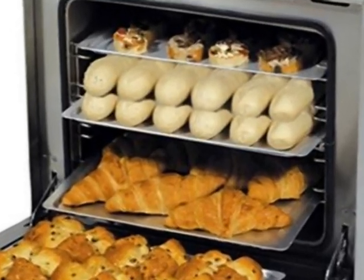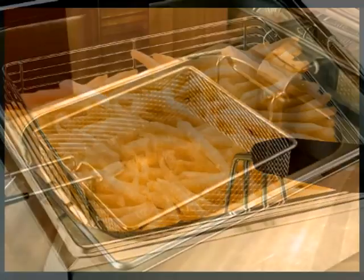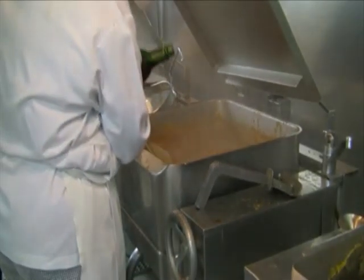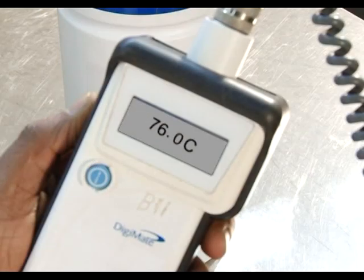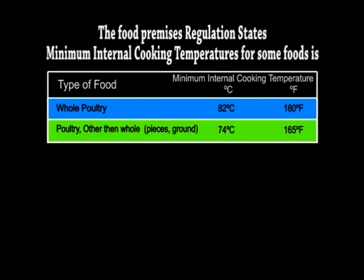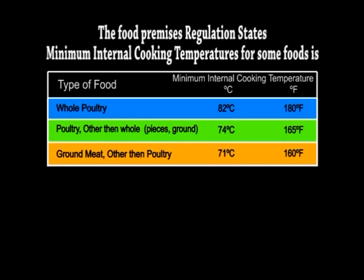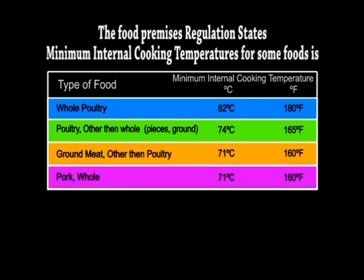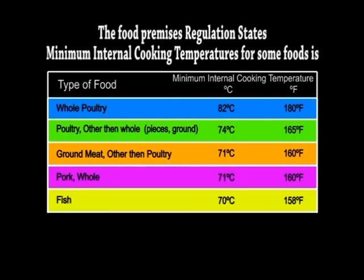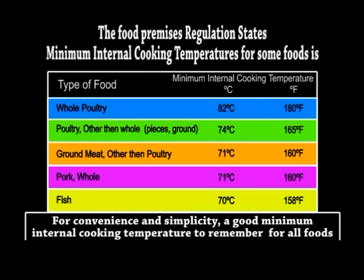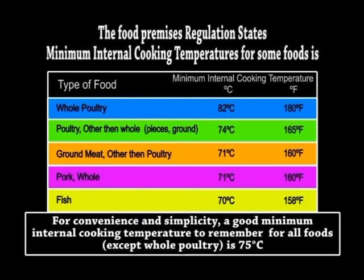Avoid overloading ovens and fryers as the heat may not penetrate the food evenly. When cooking an item with different types of meat mixed together, cook to the highest required temperature. The food premises regulation states minimum internal cooking temperatures: whole poultry — 82°C; poultry pieces and ground poultry — 74°C; ground meat other than poultry — 71°C; pork whole — 71°C (160°F); fish — 70°C. For convenience, a good minimum internal cooking temperature to remember for all foods except whole poultry is 75 degrees Celsius.